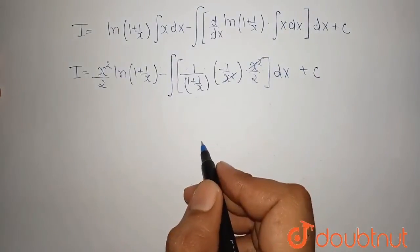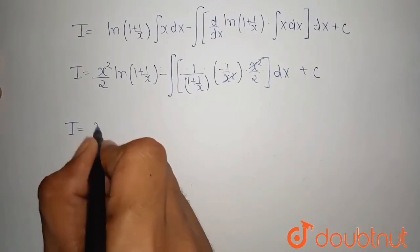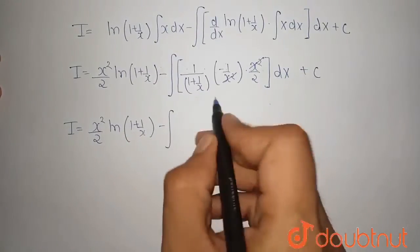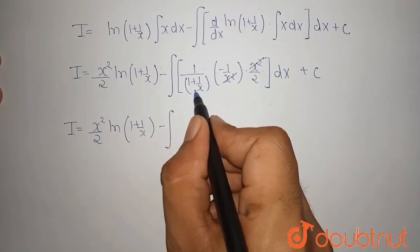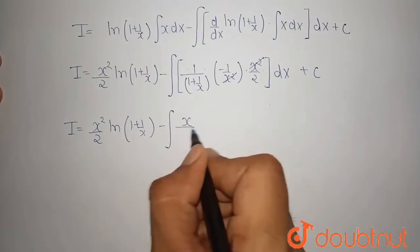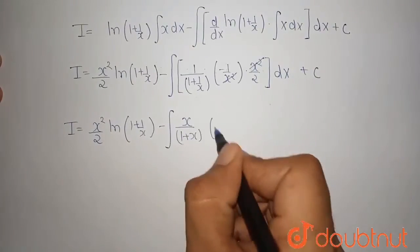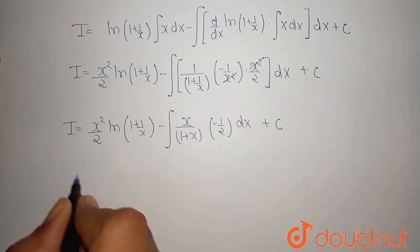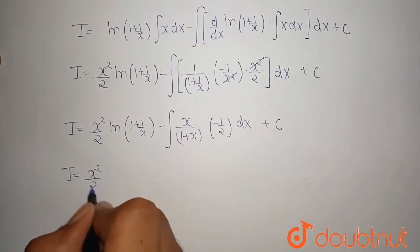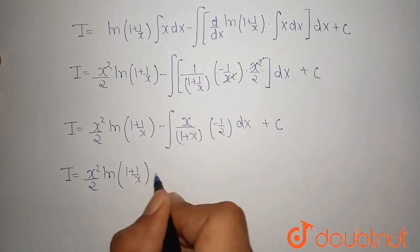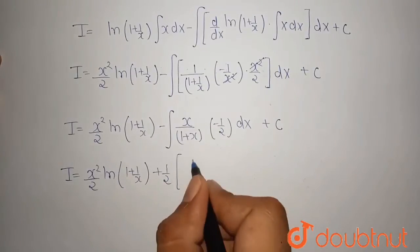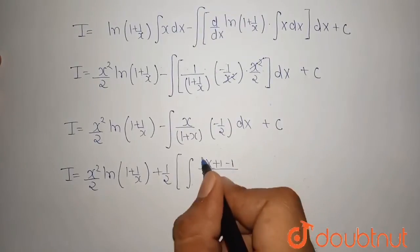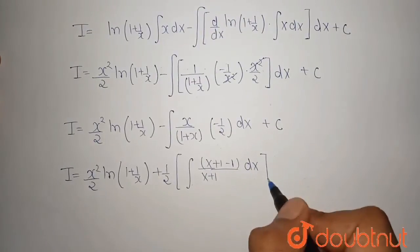Now, the x² terms cancel. So our expression becomes I equals x²/2 times ln(1 + 1/x) minus the integration of the remaining term. Shifting x to the numerator, it is written as x/(1 + x) times minus 1/2 dx plus c. Since minus 1/2 is a constant, take it out of the integration. So I equals x²/2 times ln(1 + 1/x) plus 1/2 times integration of x/(x + 1) dx.